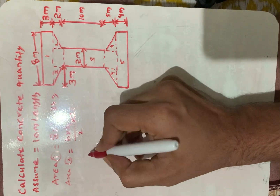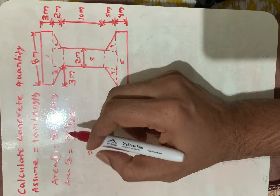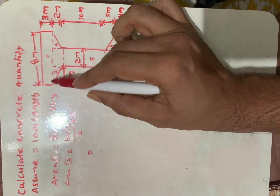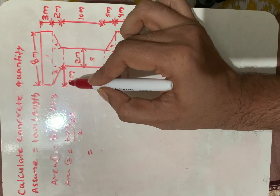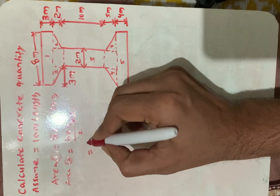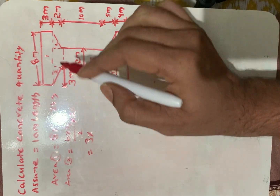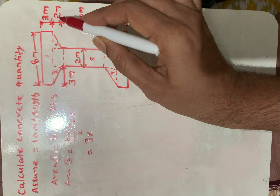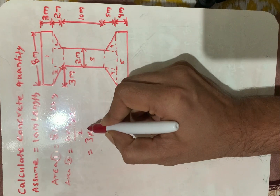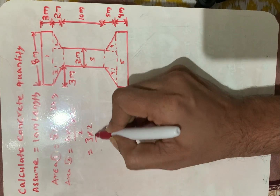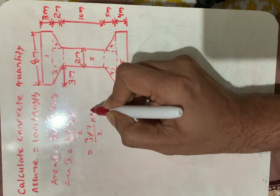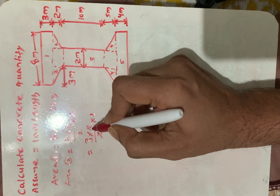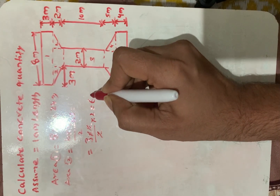The base B is 3 meters — that is the distance from here to here. The height from this point to this point is 2 meters. So: 3 × 2 / 2 × 2 — the two 2s cancel — giving 6 square meters.